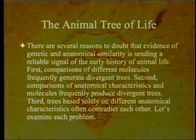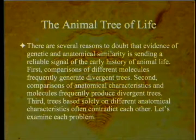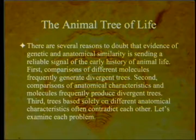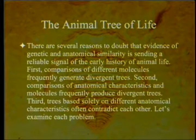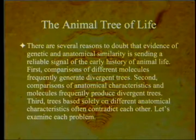There are several reasons to doubt that genetic and anatomical similarity is sending a reliable signal of the early history of animal life. First: comparisons of different molecules frequently generate different, divergent trees. Second: comparisons of anatomical characteristics and molecules frequently produce divergent trees. Third: trees based solely on different anatomical characteristics often contradict each other. He's going to say the whole thing is a mess — all three logical parts of it.